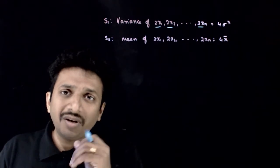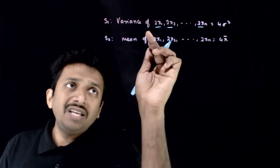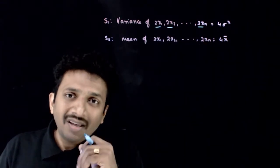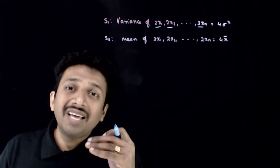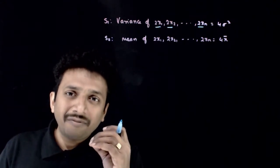This is a direct question based on theoretical concepts. If you multiply each of the readings by a number k, the variance increases k² times. That is the property of the change of variance.